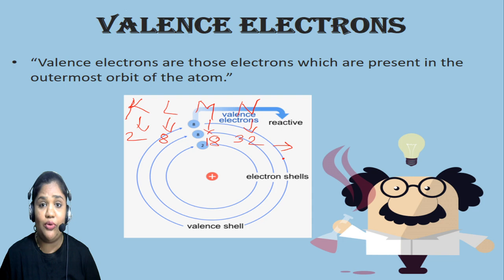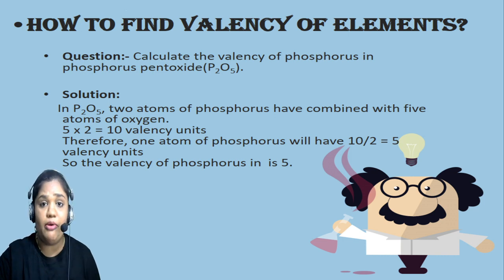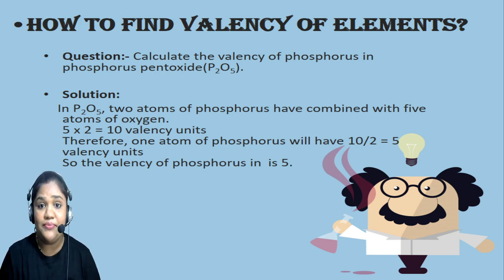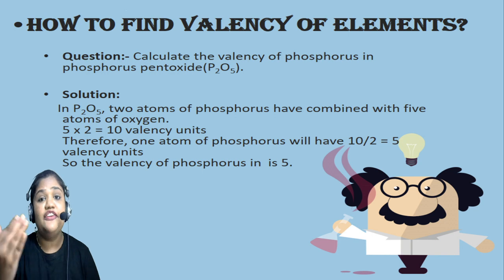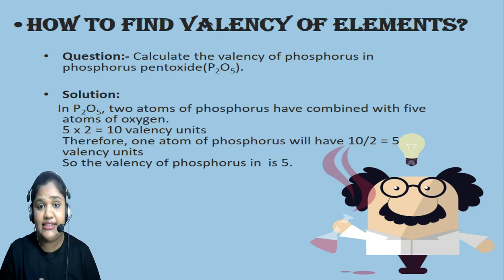Now let's discuss how to find the valency of an element. You know that valency is the combining capacity, and valence electrons are those electrons present in the outermost orbit or outermost shell. So how do we find the valency of a particular element? There are different ways to find the valency of an element. Let's discuss.